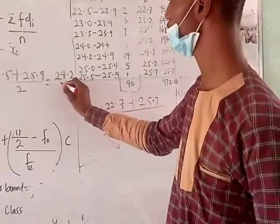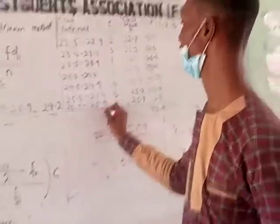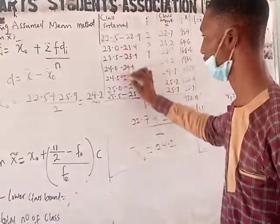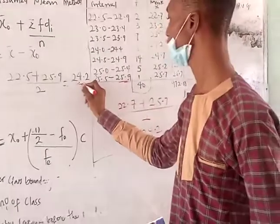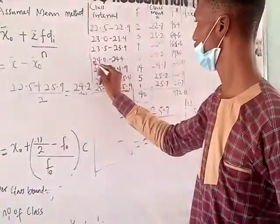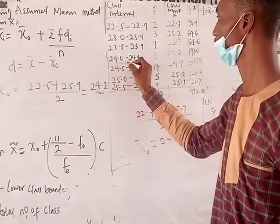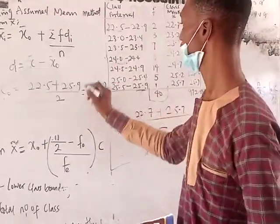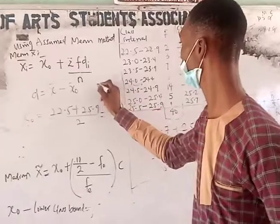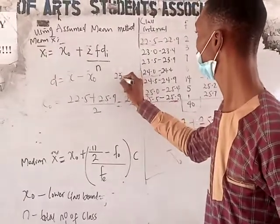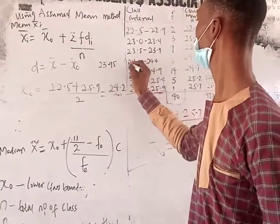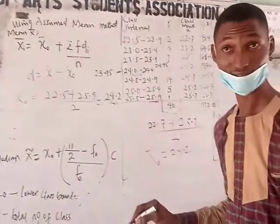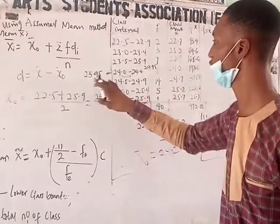So when you get the value of your assumed mean by adding the first and last class midpoints and dividing by 2, it will fall somewhere in the table. You can see 24.2 — my 24.2 is in what range? It's here. So my 24.2 is somewhere here, and you know that the class boundary for this range is 23.95 to 24.45. Yes, correct. That is for the class boundary.